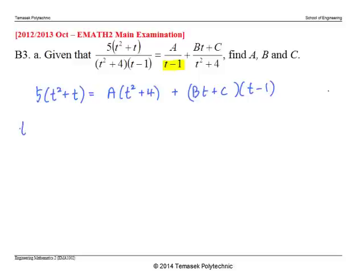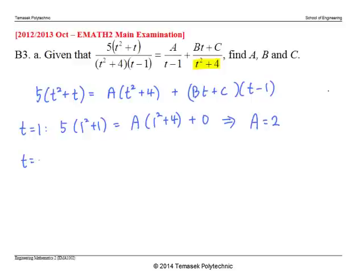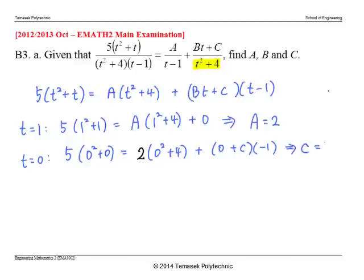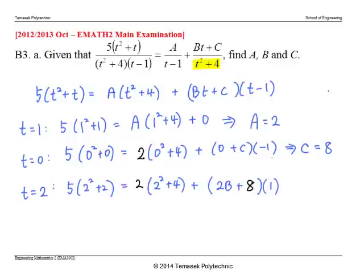Setting t minus 1 to zero gives t equals 1. Substituting, we get a equals 2. Next, since setting t squared plus 4 to zero gives complex answers, it's easier to use t equals 0. Substituting and replacing a with 2, we solve to get c equals 8. For the last equation, choose another simple number such as t equals 2, substitute the known values of a and c, and solve to get the value of b.